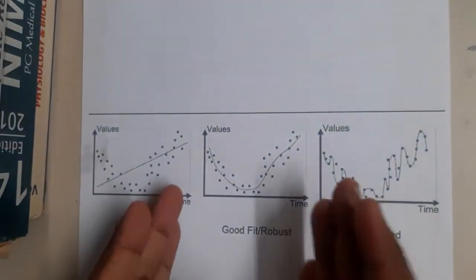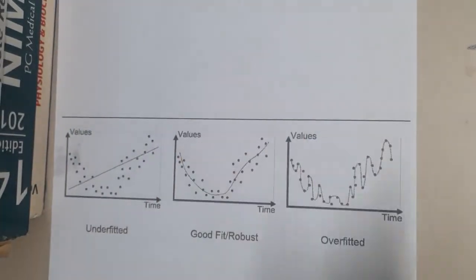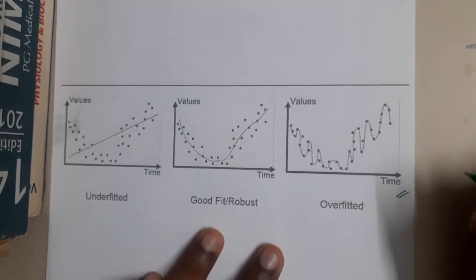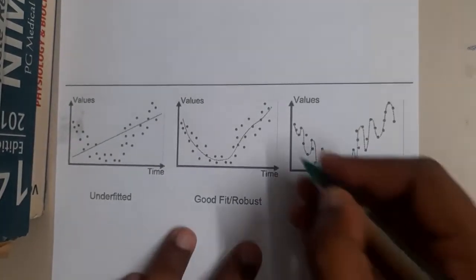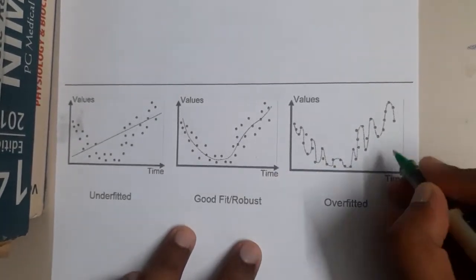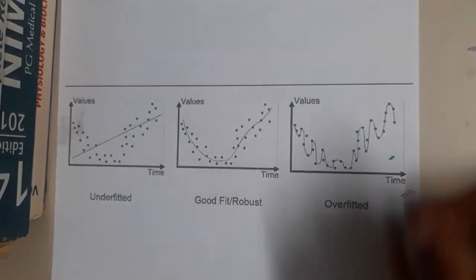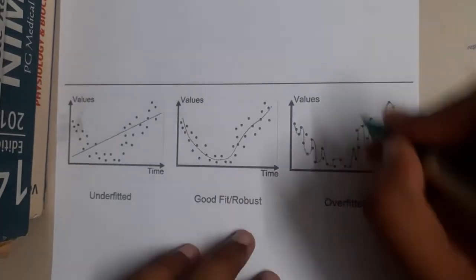Let's start with overfitting. Overfitting is a state in which your graph or line tries to connect each and every point. If you notice here, it's trying to connect each and every dot. This concept is called overfitting.